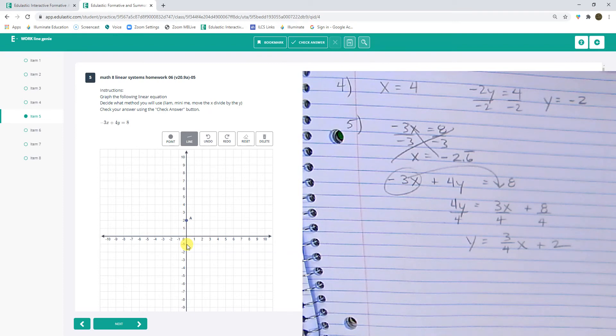I'm going to go down 3 over 4. 1, 2, 3. 1, 2, 3, 4. I don't... 2. Something's weird. Something's weird.